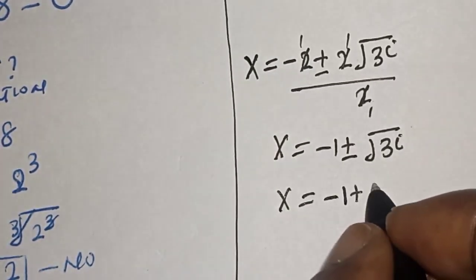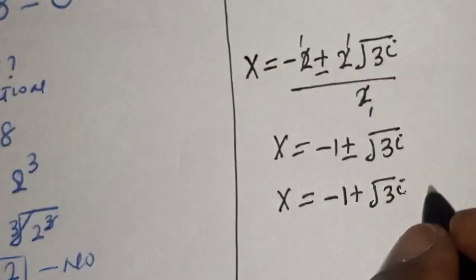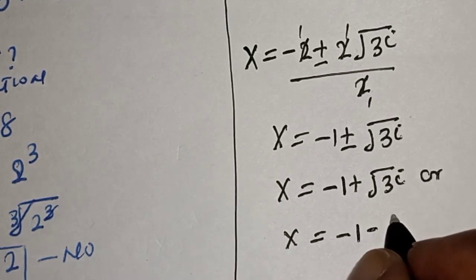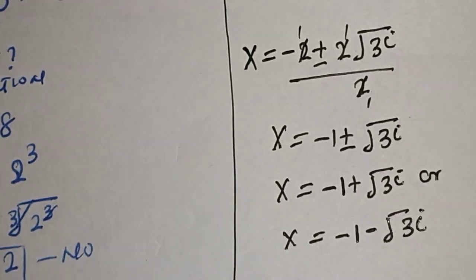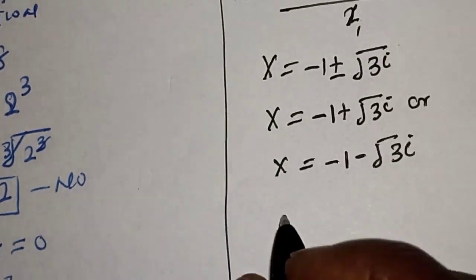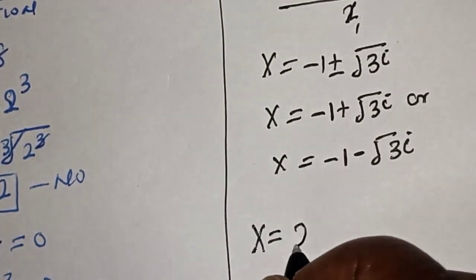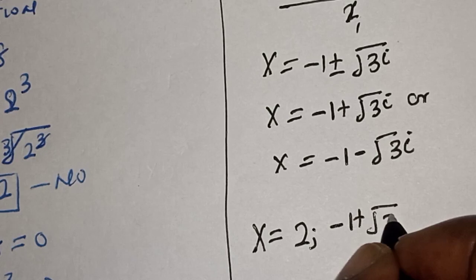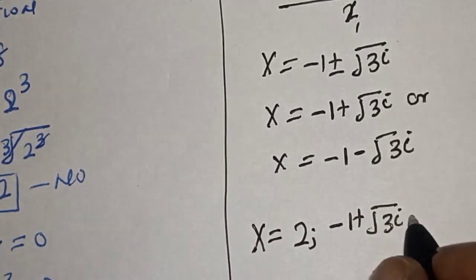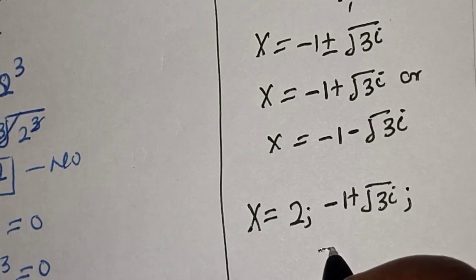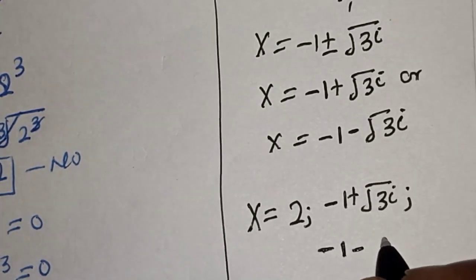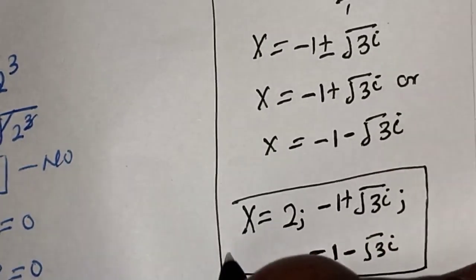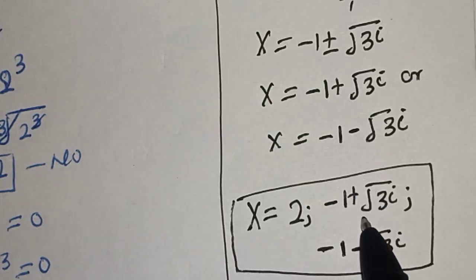Therefore s is equal to minus 1 plus square root of 3i, or s is equal to minus 1 minus square root of 3i. Our final answers are s is equal to 2, s is equal to minus 1 plus root 3i, and s is equal to minus 1 minus root 3i. See you in the next video. Thank you. Bye-bye.